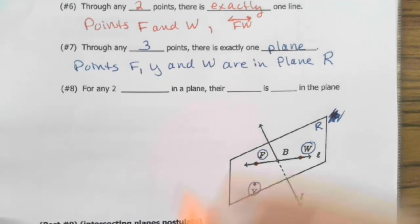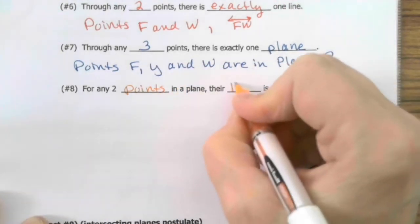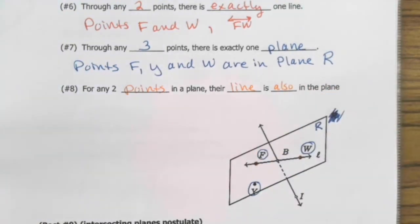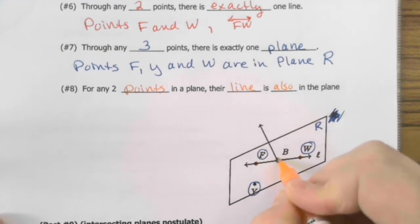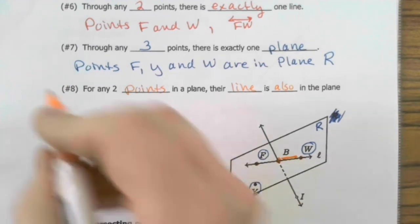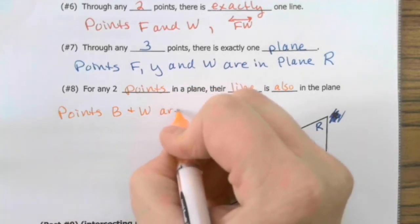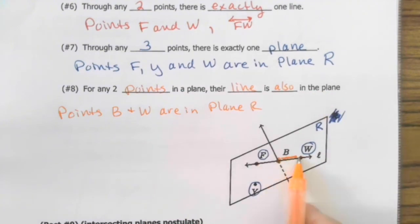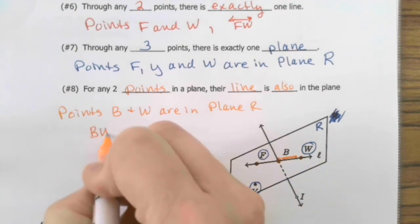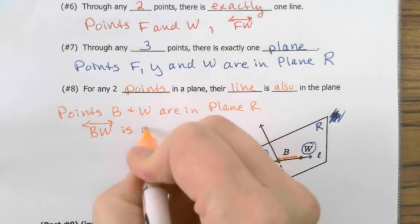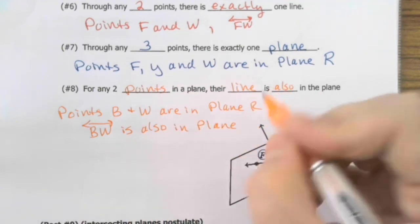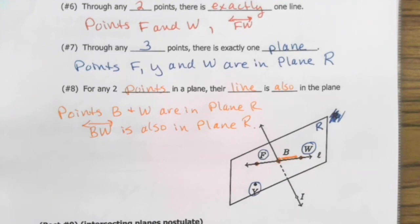Okay, postulate number eight. For any two points in a plane, their line is also in the plane. Okay, so if we look at B and W, we can see that points B and W are in plane R. B and W sit in plane R. This any points postulate says that the line B, W is also in plane R. So these are your any points postulates.